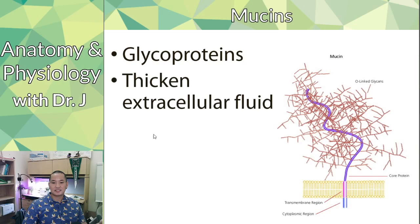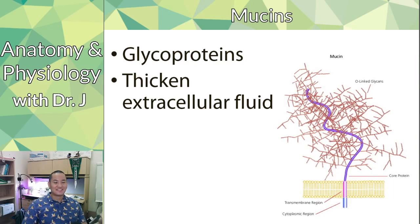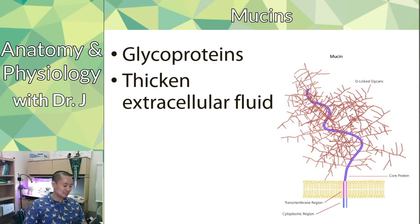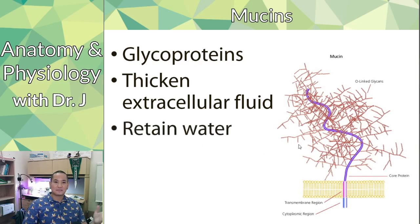Mucins are glycoproteins that thicken extracellular fluids. They have a polypeptide backbone with branching sugar chains — 'glyco' means sugar. These sugars attract and retain water, because sugar is very attracted to water, just like cotton candy absorbs moisture from the air. All these carbohydrates help create a gel-like substance. This is what thickens mucus.